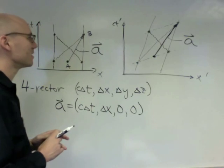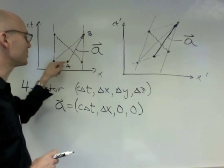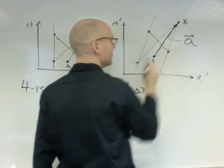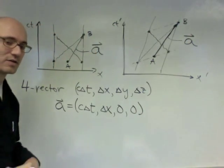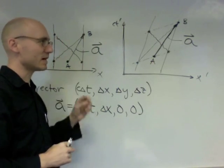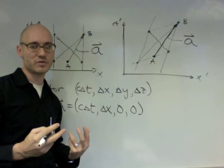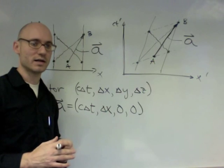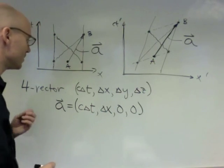But it is still the same four vector displacement. It is the space-time separation between events a and b. And events a and b exist in both space-times. And the displacement between them exists in both space-times. So this a vector in some sense exists in both space-times.